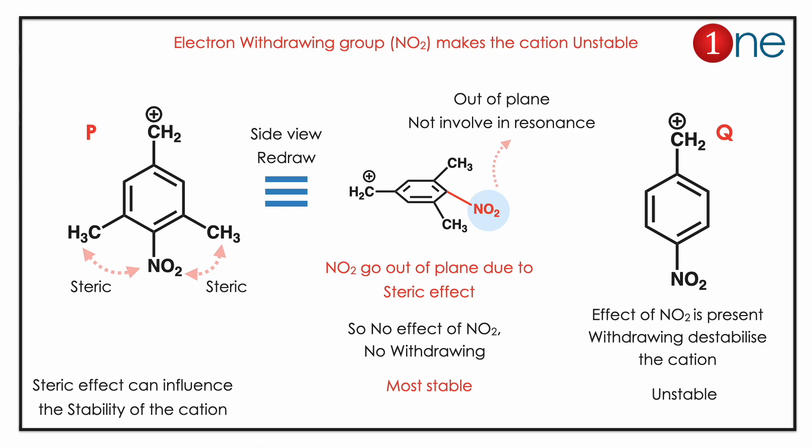In P, there are two steric methyl groups flanking the nitro group, so NO2 goes out of plane and does not participate in resonance. Therefore, the NO2 effect is zero in P. Only the CH2+ is present, so P is considerably more stable.